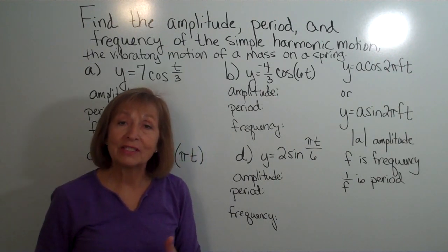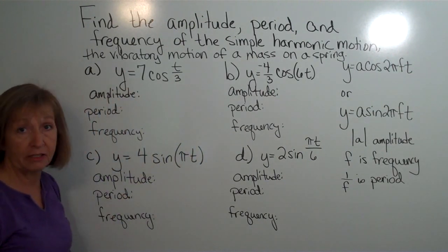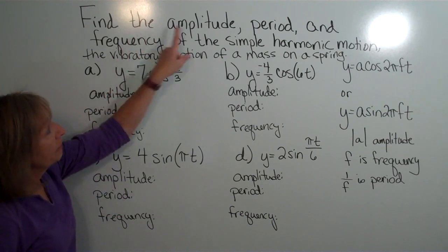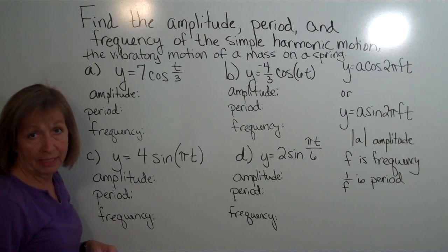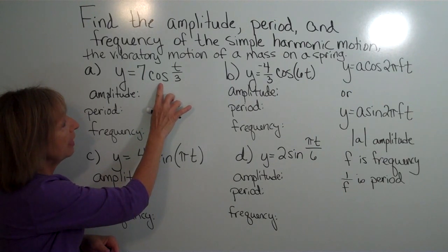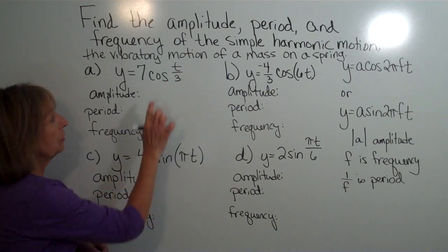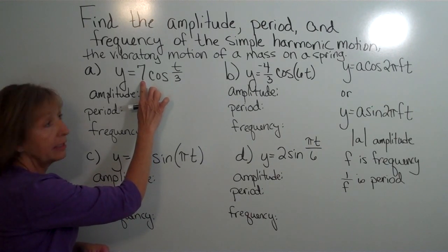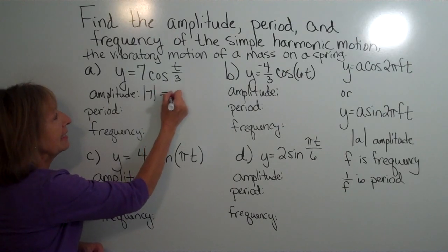Let's look at some examples of identifying these components for four different cases. We're asked to find the amplitude, the period, and the frequency of each simple harmonic motion. The first one is y equals 7 cosine of t over 3. The amplitude is the absolute value of the number multiplied to the trig function, so the absolute value of 7 is 7.